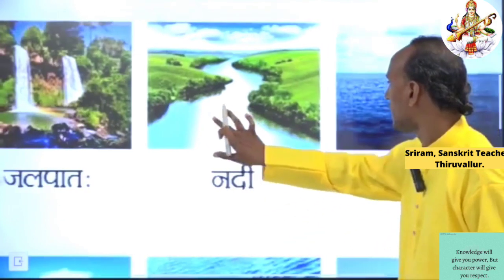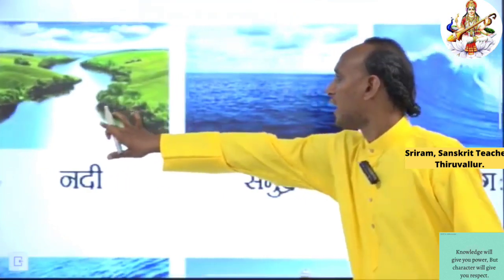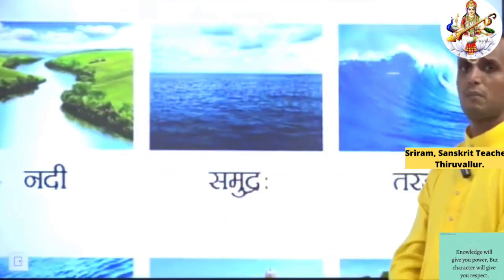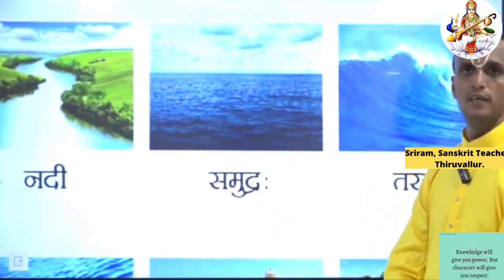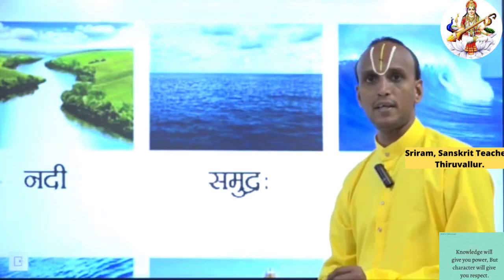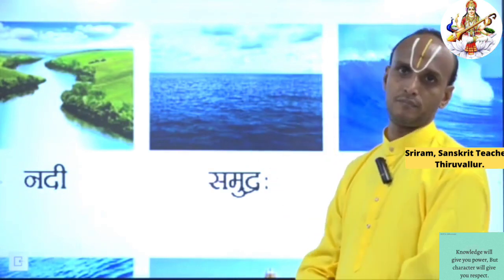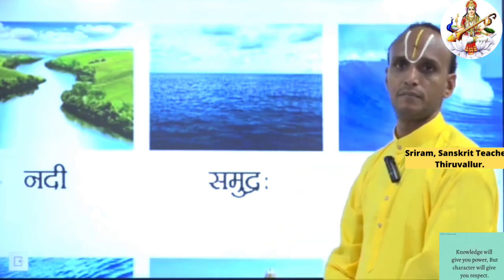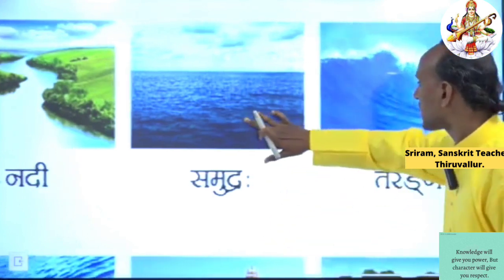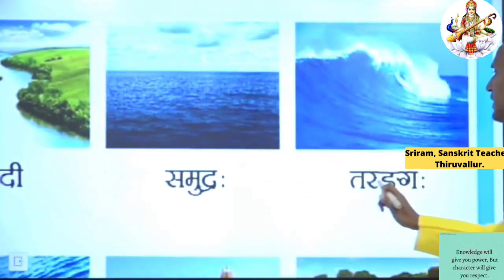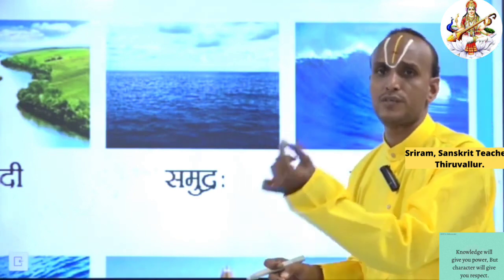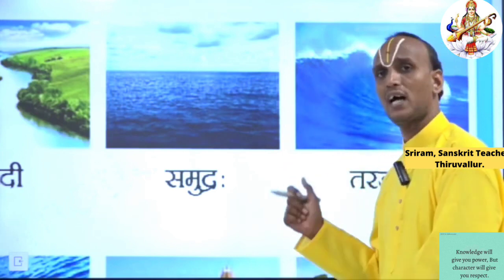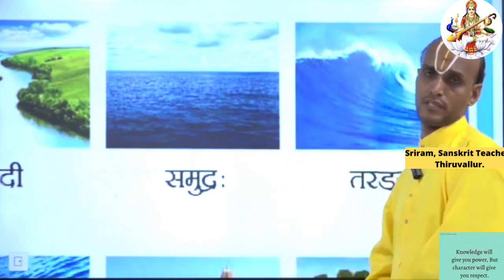Then the next one — Samudraha. What is meant by Samudraha? By seeing this picture you can easily understand. Samudraha means Ocean. In Tamil we say Kadal. Then the next one — Tarangaha. What is meant by Tarangaha? Tarangaha means Waves. In Tamil we say Alai.